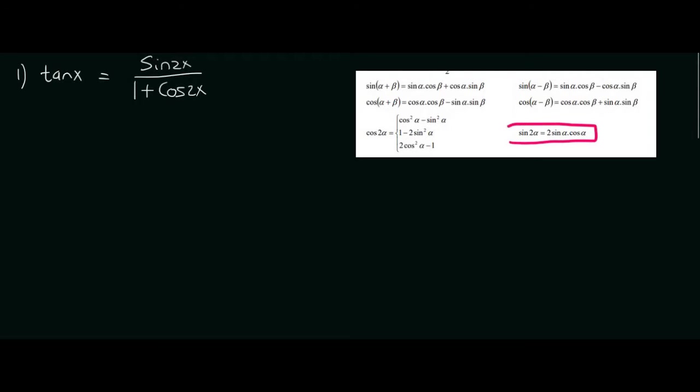With sin 2x it's a really nice one to have because it can only become one other thing, and it usually helps to change it into that other thing. Another confirmation of that is that tan x we know is actually sin over cos, so we want our answer to have a sin at the top.